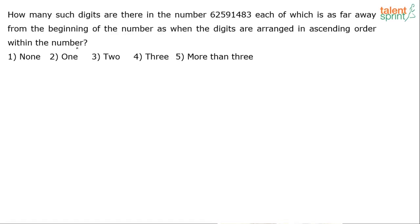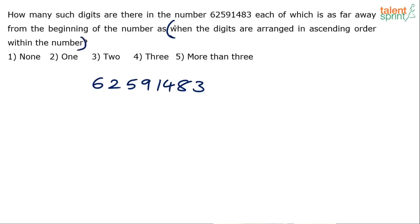It sounds a little complex to understand but the solution is very easy. All we have to do is find out how many such digits are there in this number 62591483. We have to find digits each of which is as far away from the beginning of the number as when the digits are arranged in ascending order within the number. What are the digits we have? 62591483. Arrange these digits in ascending order.